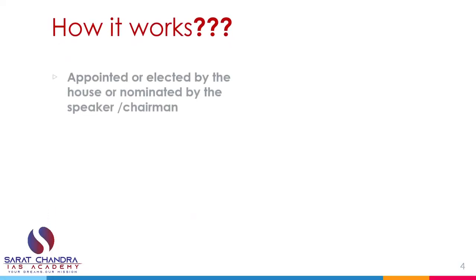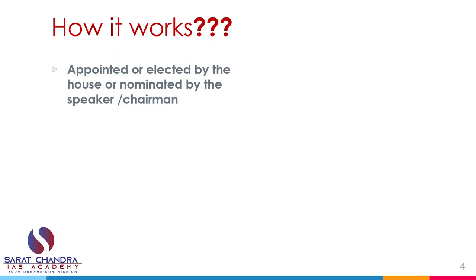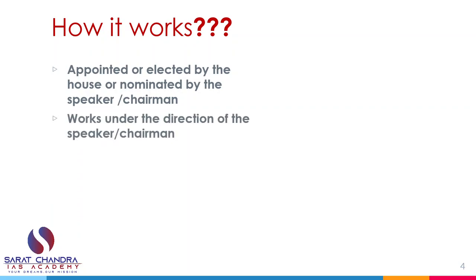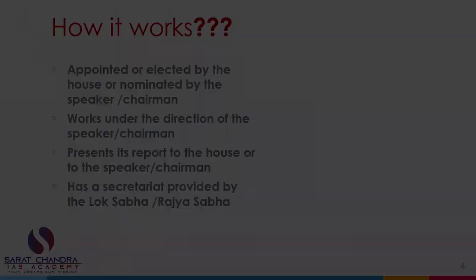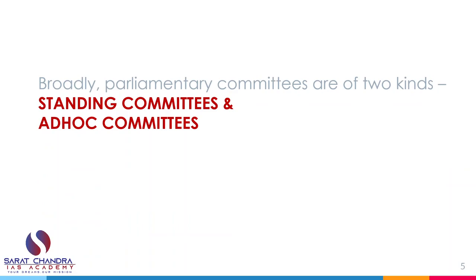Parliamentary committees are appointed or elected by the house, or nominated by the speaker. They work under the direction of the speaker and report their functions and working to the speaker. They also have a secretary provided by Lok Sabha and Rajya Sabha. There are two sorts of parliamentary committees: standing committees and ad hoc committees.